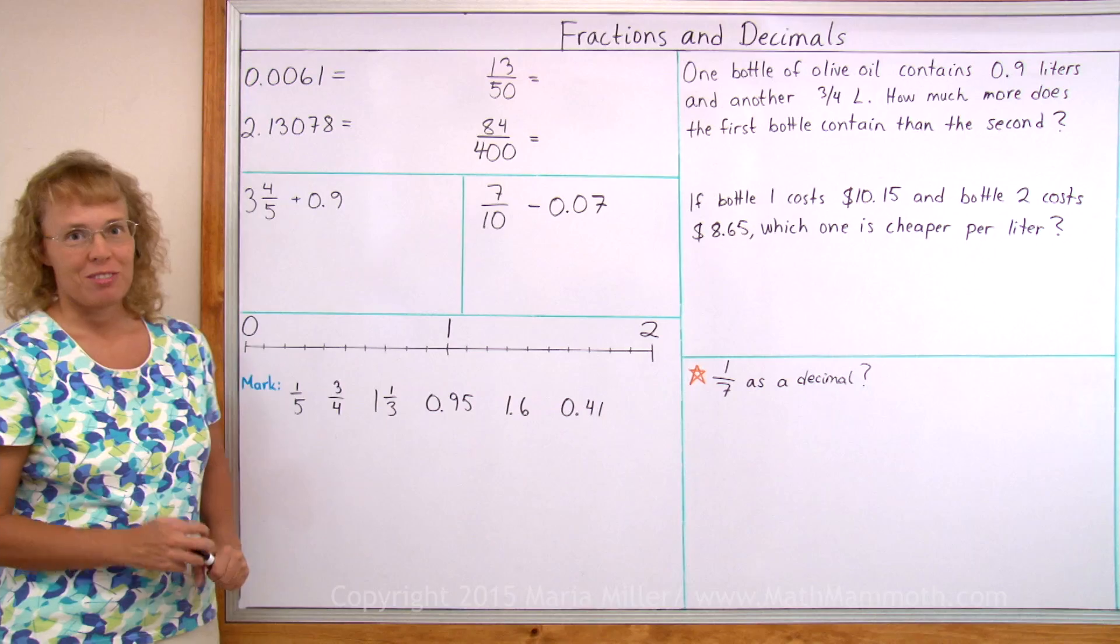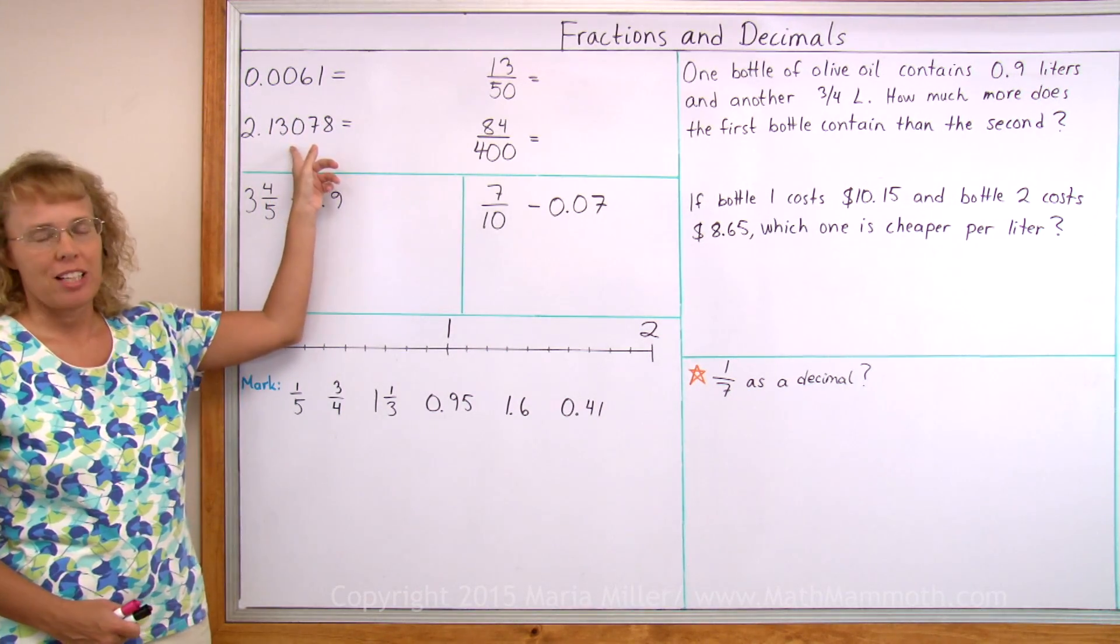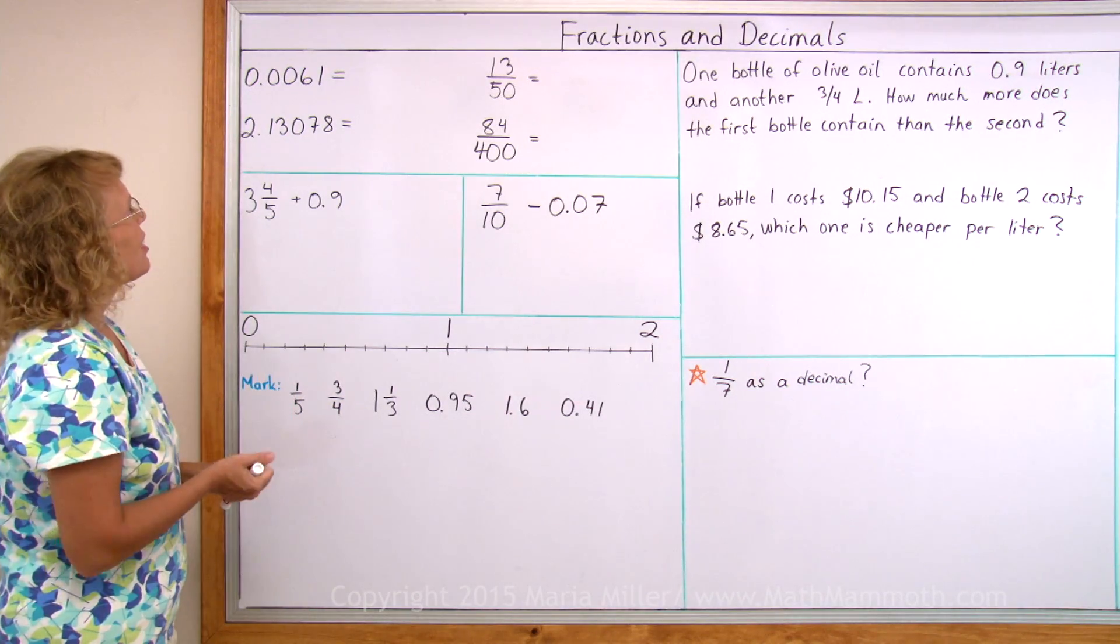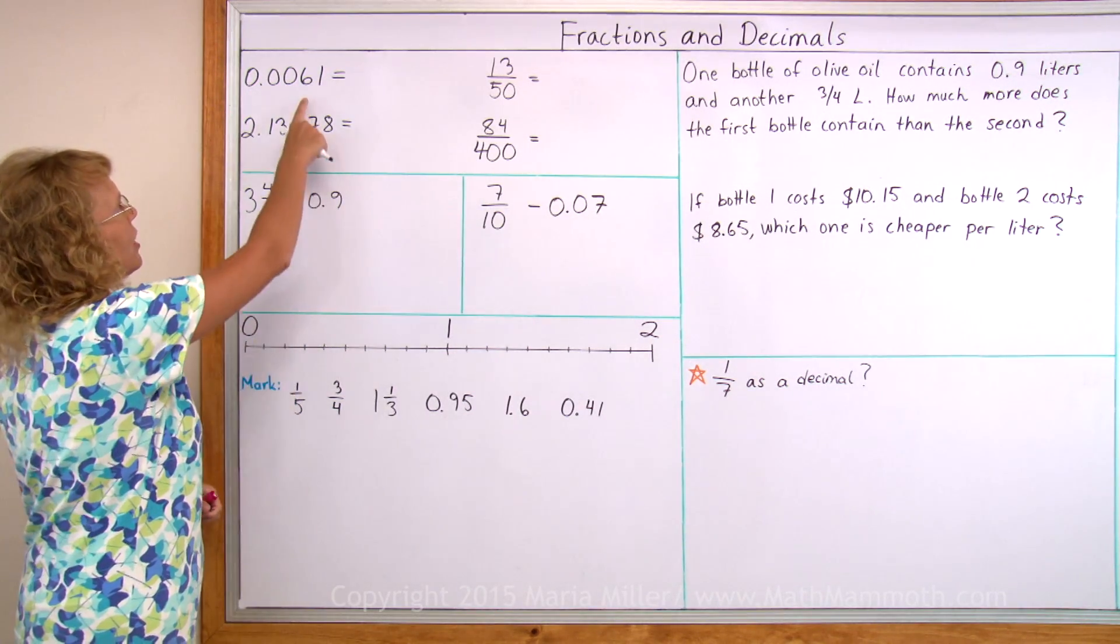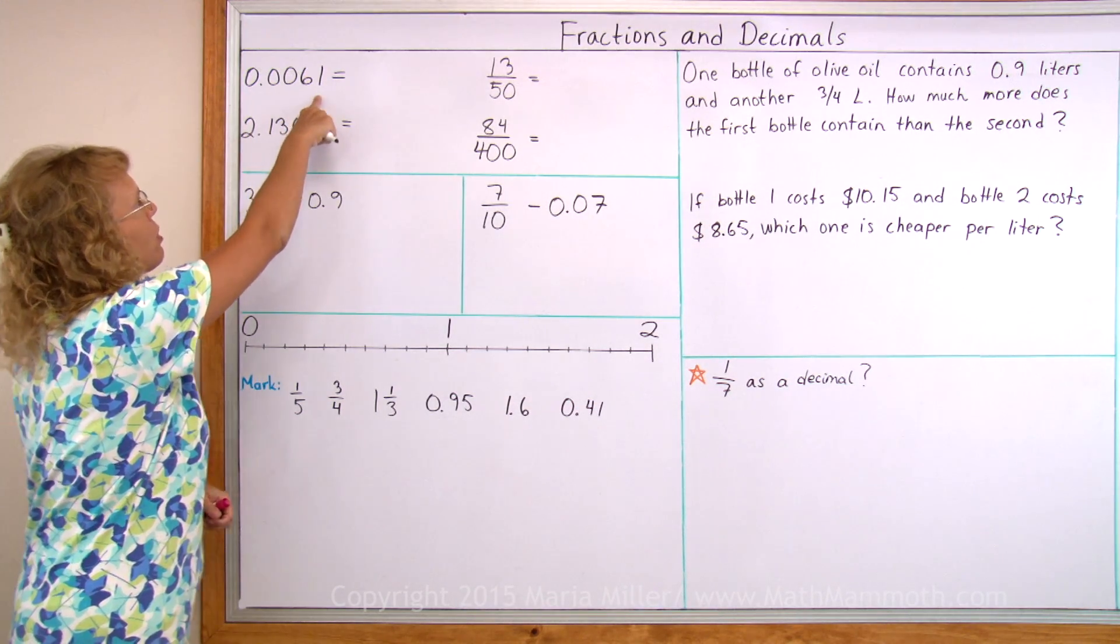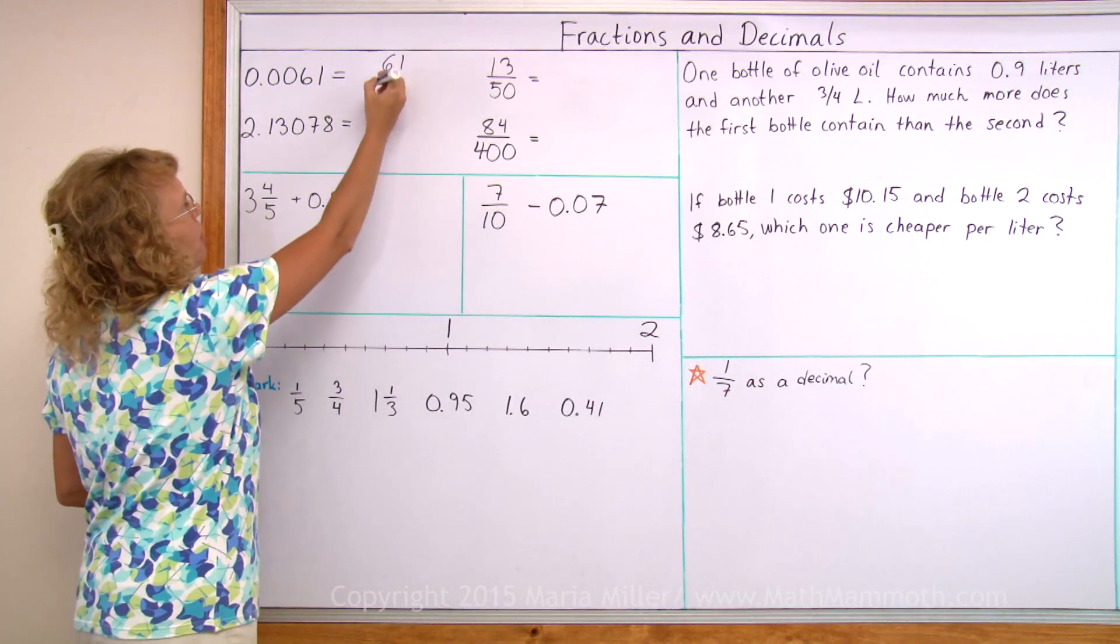First, some review. Let's convert or write these decimals as fractions. And of course decimals are fractions. If you remember, it is very easy to write this as a fraction. You just take those digits, not the zeros, but those digits 6 and 1, write them as the numerator.